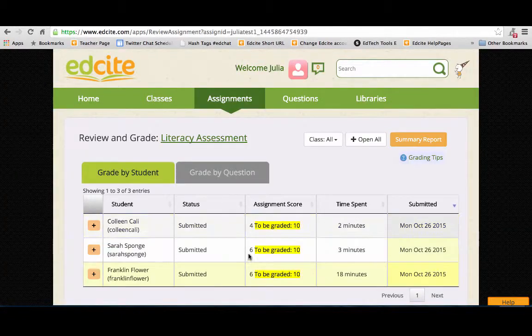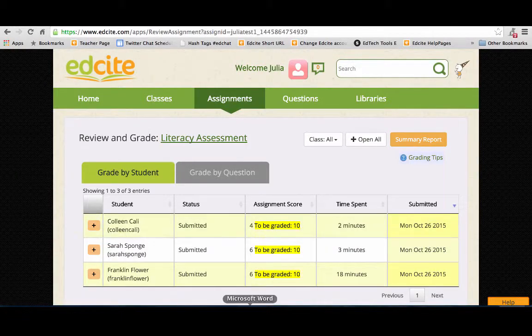So let's say I go into the report. I can automatically see how students are doing on the parts that have been graded. I can also see how many points I need to go in and actually teacher grade. All questions that have one correct answer are automatically graded.